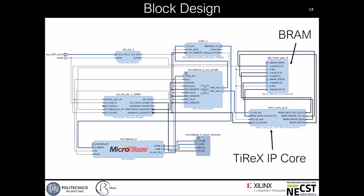Lastly, we produced a block design with all the IP cores needed to generate the bitstream and test it on the VC707 board. As we can see, there is the MicroBlaze used only to test the cores and program them using Vivado SDK, the AXI-Lite infrastructure to send and receive data through all the blocks in the design, the BRAM directly connected with the Tyrex IP core, and finally our custom Tyrex IP core.